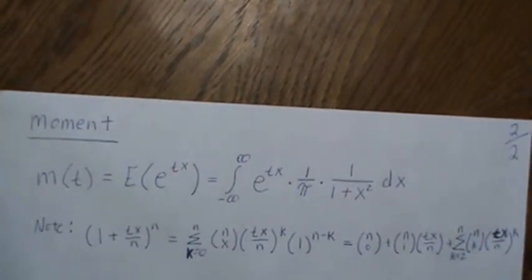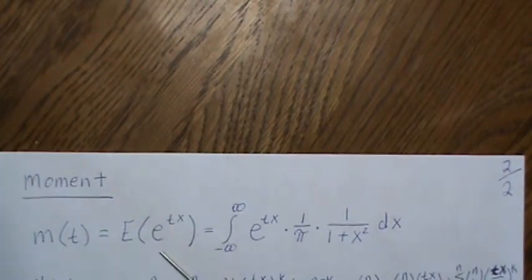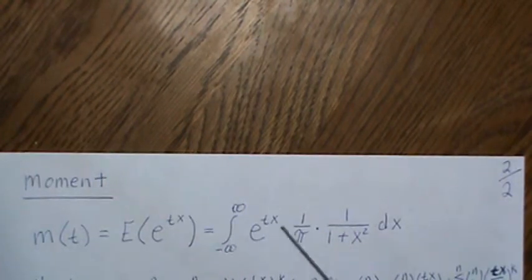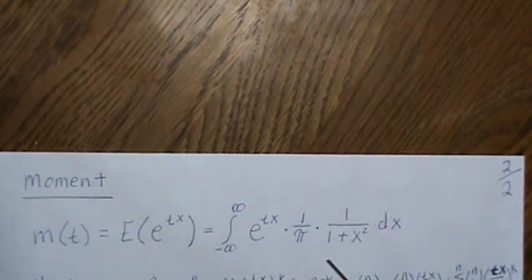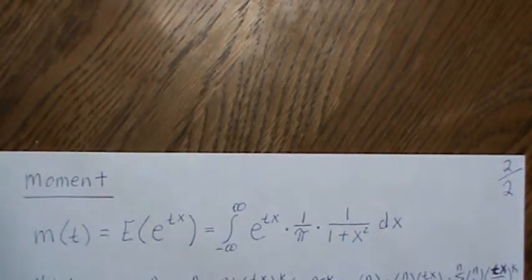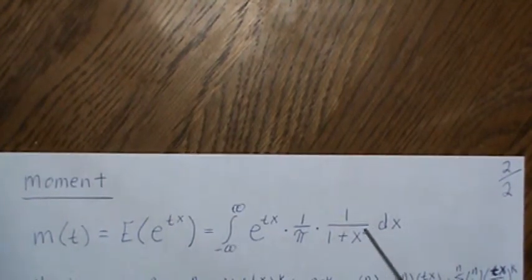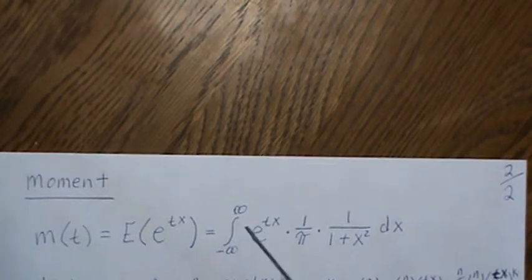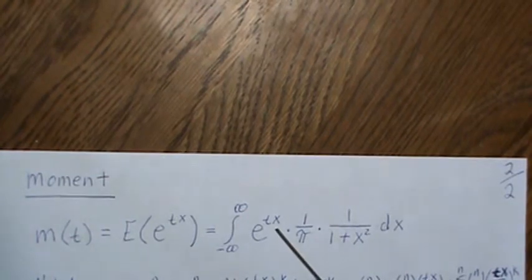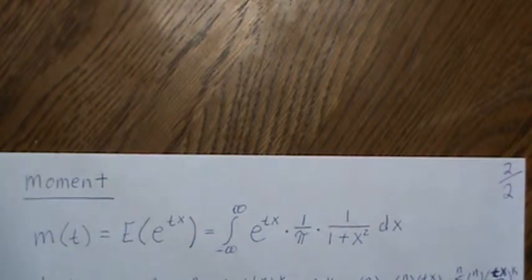Here we have the moment generating function, so we plug in e^(tx) here and evaluate. The goal is to find the convergence range - where does this converge or become finite, for what values of t? Before we do that, I want to give you one note we're going to use - a neat little proof.